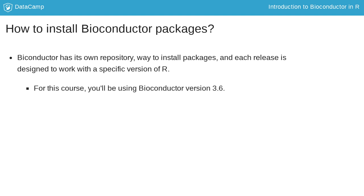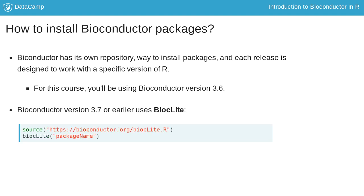To install Bioconductor packages, you need two lines of code, as shown on the slide. First, use the function source on the script biocLite.R from bioconductor.org. This script will install the BiocInstaller package. Then use the function biocLite with the name of the package you want to install.